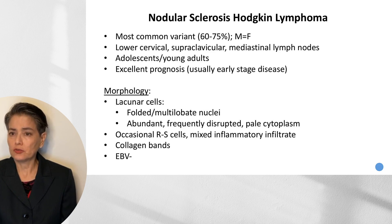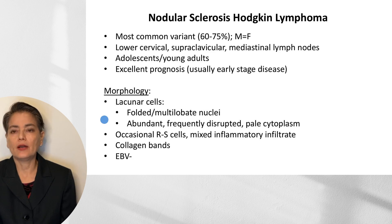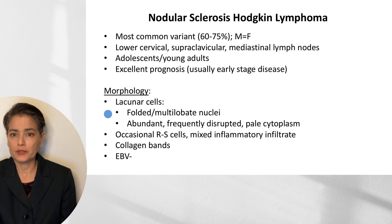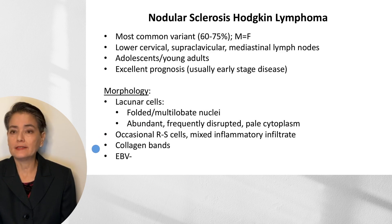In nodular sclerosis Hodgkin lymphoma, we look for lacunar cells rather than classical Reed-Sternberg cells, though occasional Reed-Sternberg cells are still present. Lacunar cells are characterized by a folded, multilobate nucleus with abundant pale cytoplasm. During sectioning, the cytoplasm tends to tear and pull away, creating the appearance of a hole punched out around the nucleus — that is where the term 'lacunar' comes from. We'll also see a mixed inflammatory infiltrate with eosinophils, neutrophils, plasma cells, and macrophages, as well as characteristic dense collagen bands — hence the name nodular sclerosis.